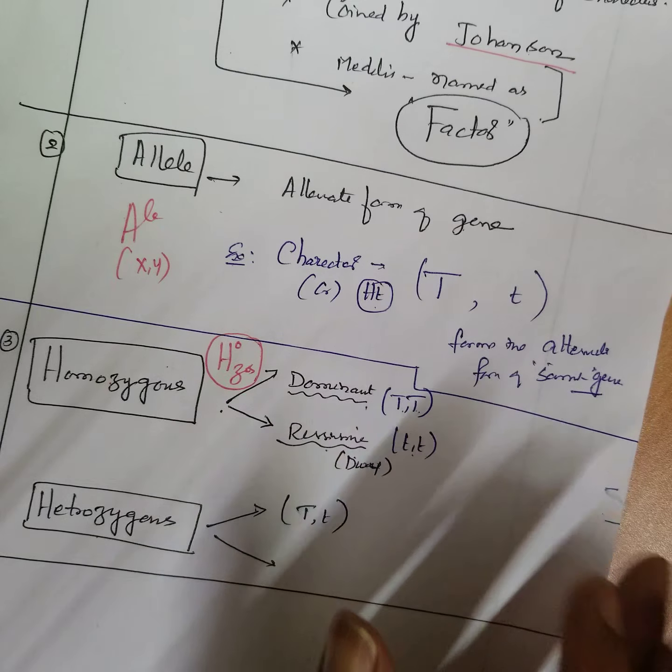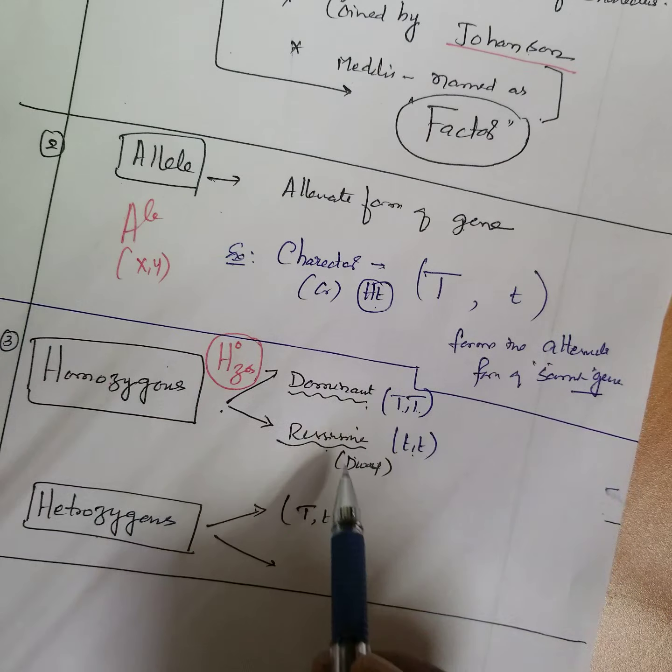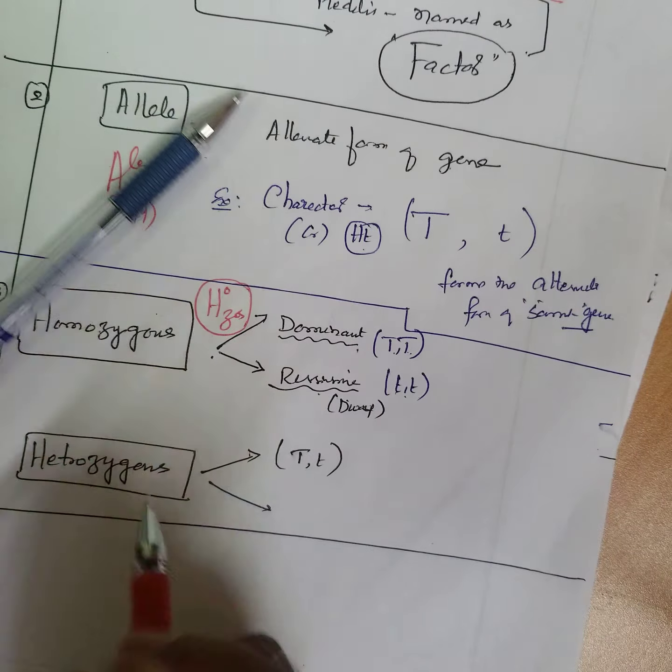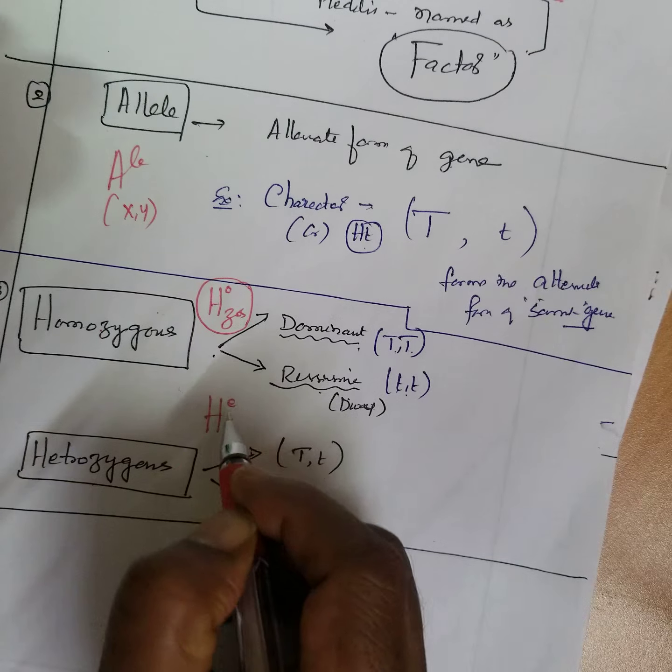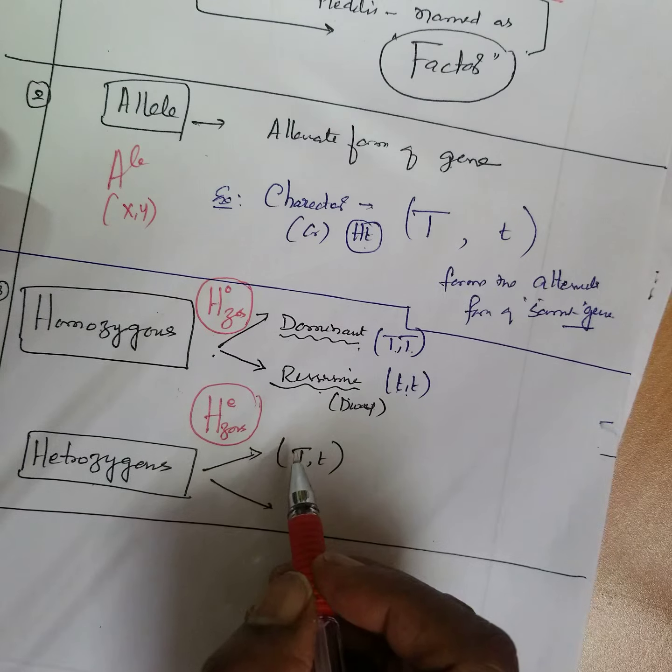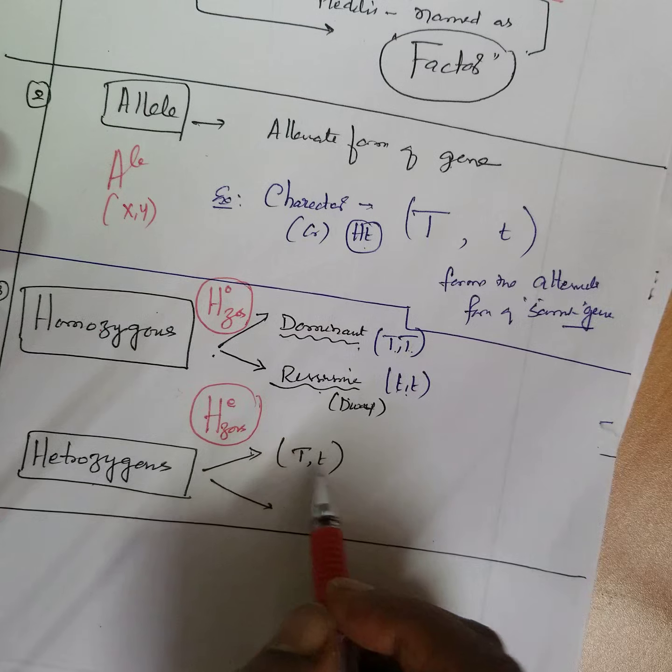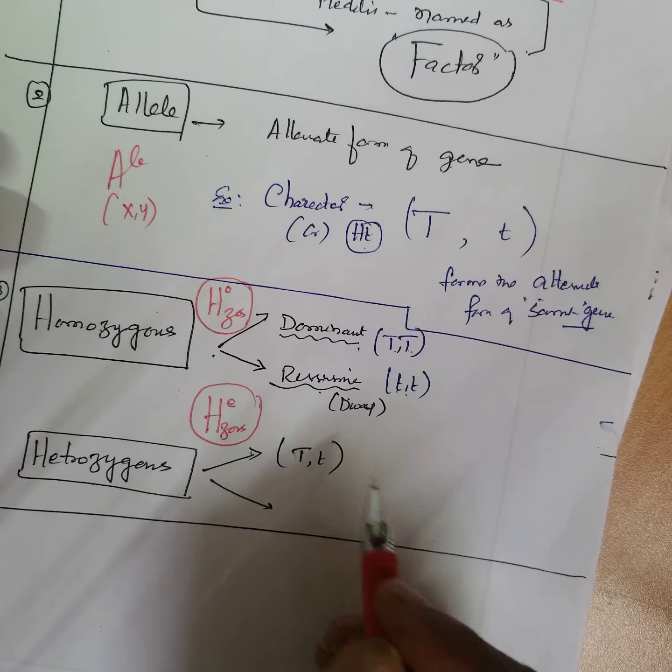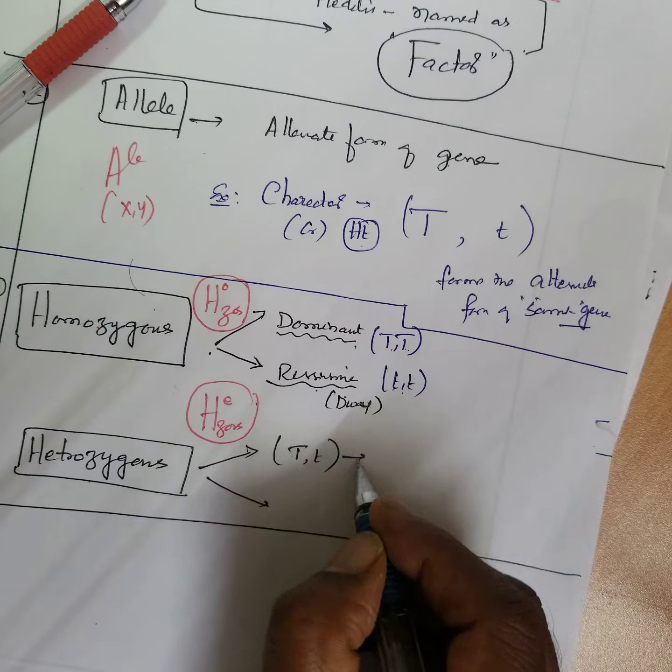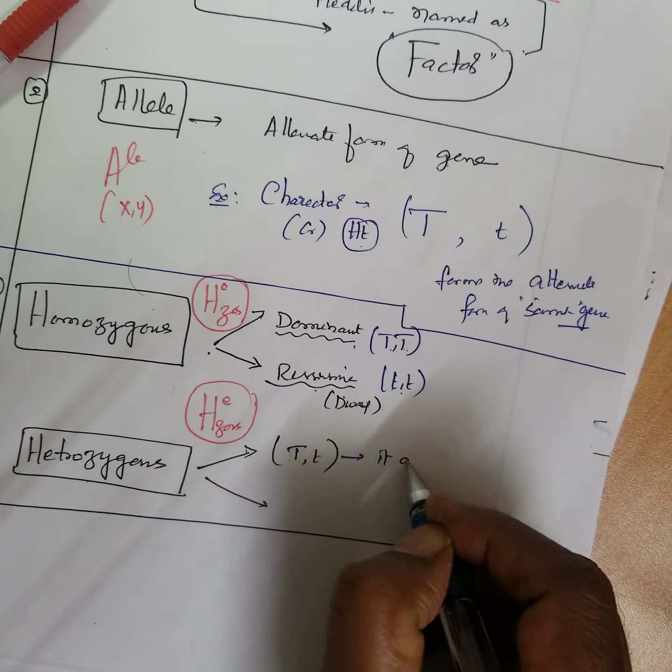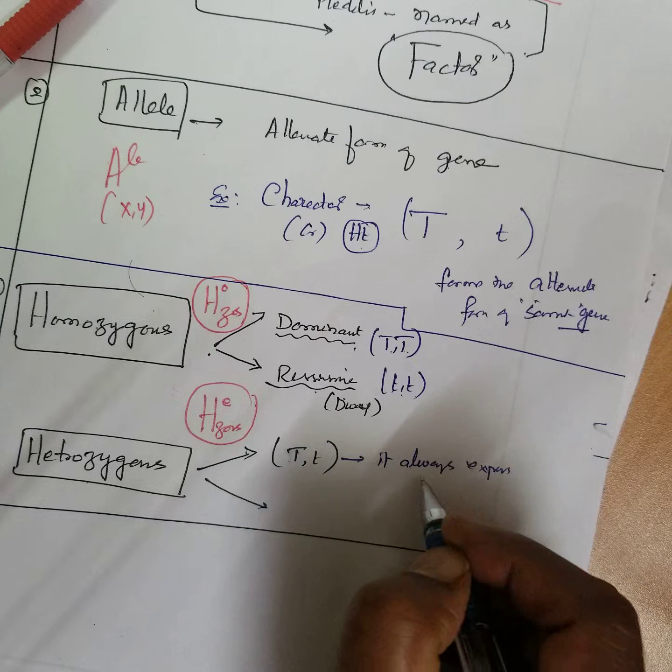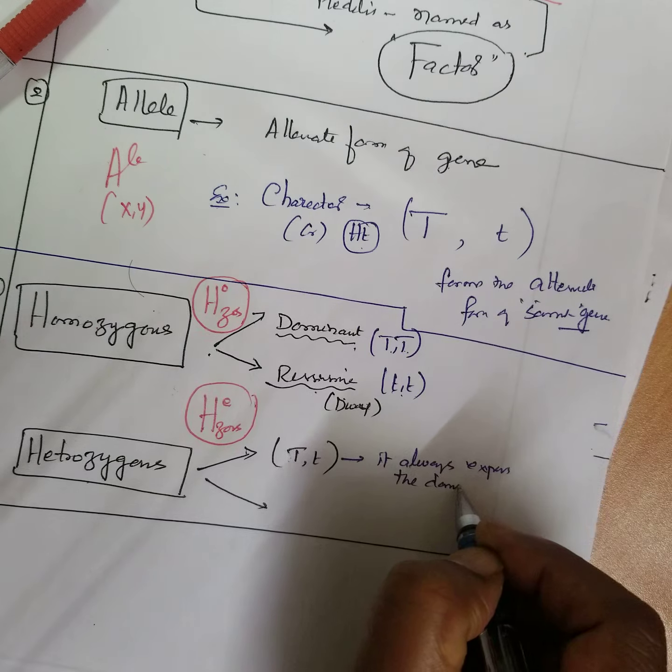These both are homozygous of the same character. But heterozygous contains always opposite - the alternate form of the same gene. It is very important: it always expresses the dominant one.